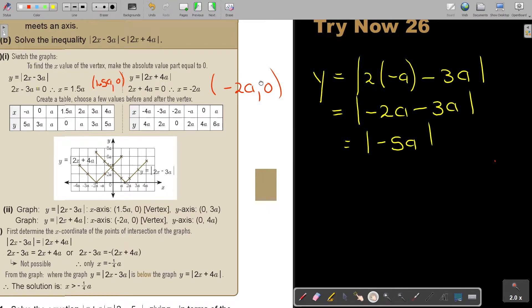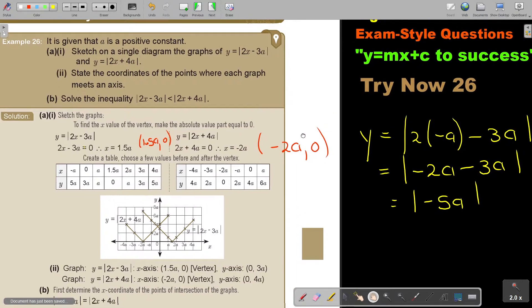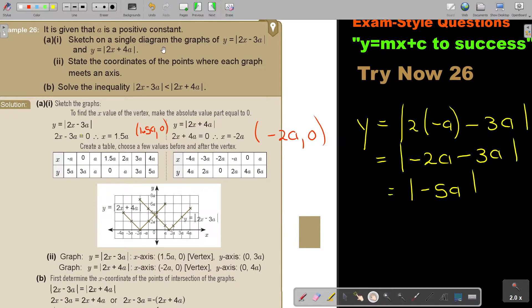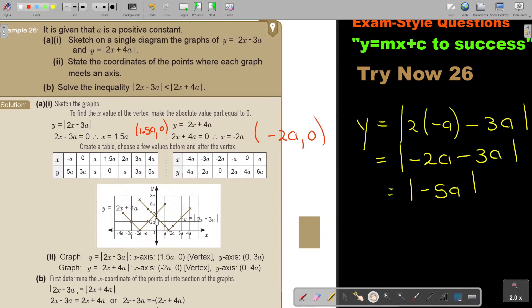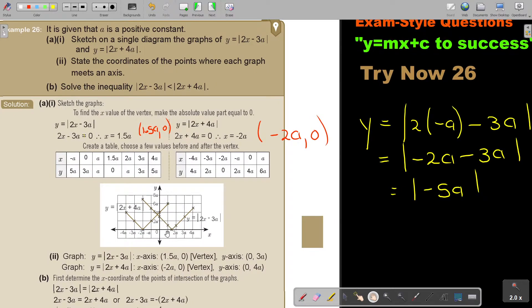Now let's go back to the question. So we sketch the graphs, a bit challenging with a and this is why I did it for you in the textbook. Now sketch in a single diagram and state the coordinates of the points where each graph meets the x and y axis. So the graph meets the x-axis here at 1.5a and 0, the vertex, and then the y-axis at 0 and 3a. So there it meets the x-axis. And now the blue one, so it meets the x-axis at negative 2a and 0, which was also the vertex, and at 0 and 4a.